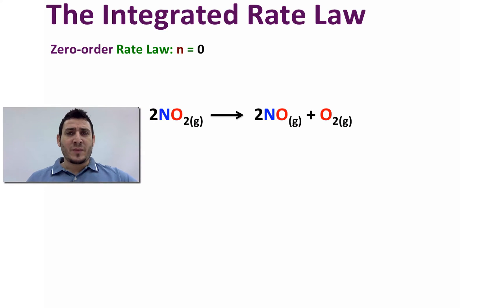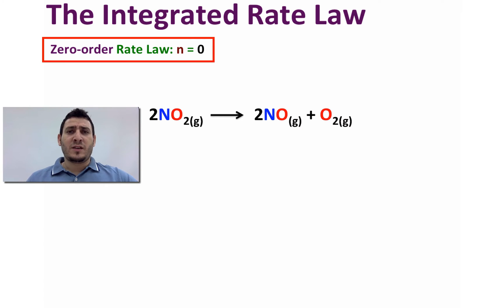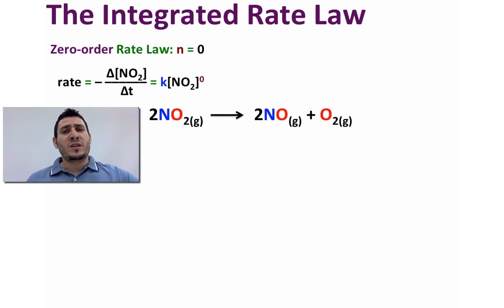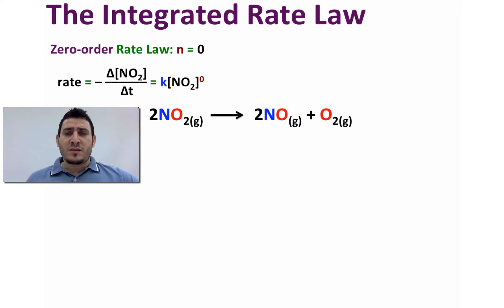Now we have defined the differential rate law for a chemical reaction. Consider the decomposition reaction of nitrogen dioxide into nitrogen monoxide and oxygen. Assume that the reaction is zero order in concentration of NO2. In this case, the differential rate law will be written as: rate is equal to the constant times the concentration of NO2 to the power zero.